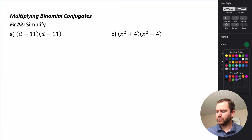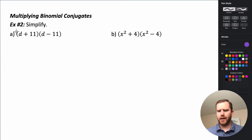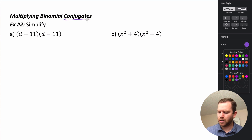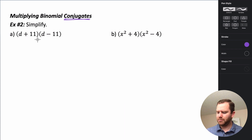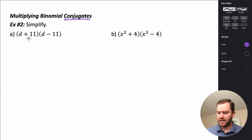Now, if we're trying to multiply binomial conjugates, it's the same process we'd use to multiply any binomials — we just end up with a pretty interesting result. Conjugates are binomial pairs that have the same values in their terms, but the signs between them are opposites. So we have d plus 11 and d minus 11 — same values, opposite signs — those are conjugate pairs.